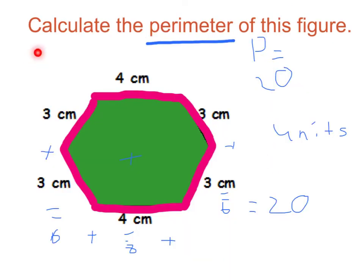We have to calculate the perimeter of this hexagon. So, this is four, three, three, four, three, three. The perimeter is equal to 20 units.